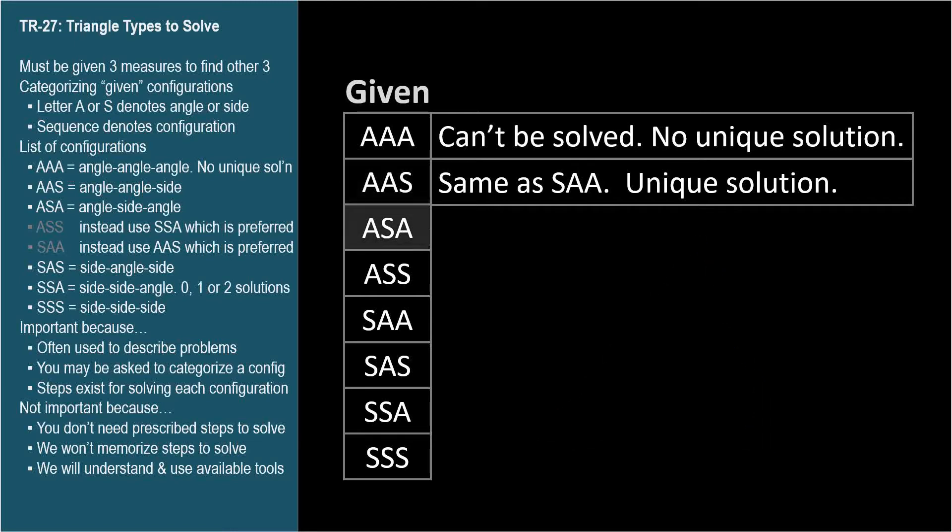ASA is angle, side, angle. We know two angles and the side that is between them. This configuration also has a unique solution and is easy to solve.